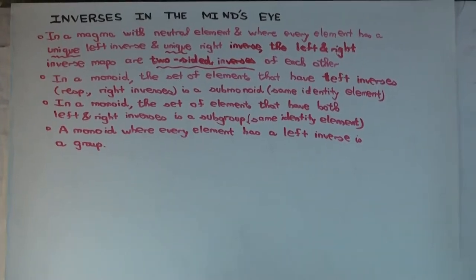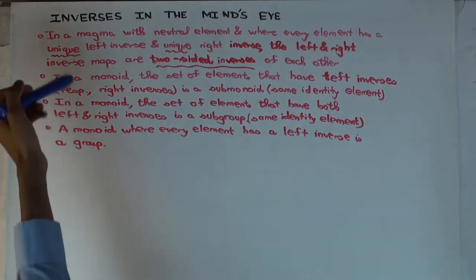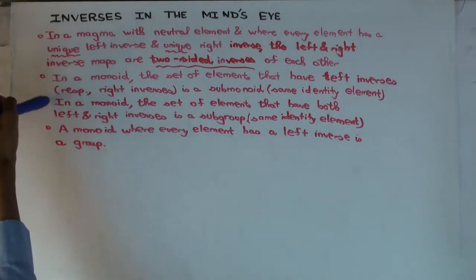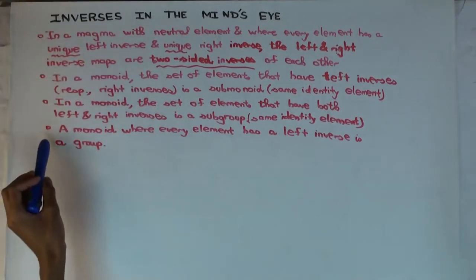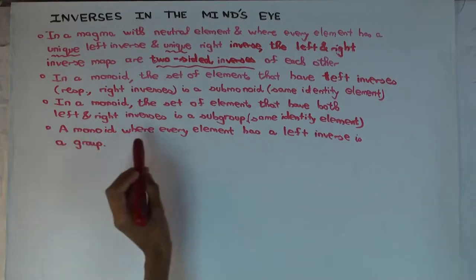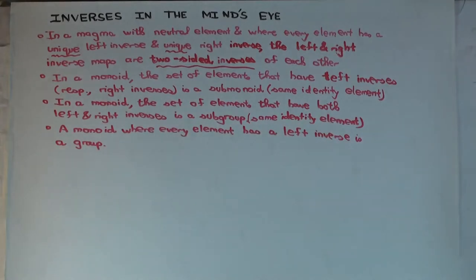In this talk, I'm going to consider a problem related to inverses. I'm going to concentrate on just one exercise, which is this: a monoid where every element has a left inverse is a group.